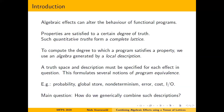Program equivalence was the topic of my talk last year at MFPS. The focus here is: given that we have for certain effects a notion of truth and an algebra given by a local description, is there a way to generically combine such descriptions? We can apply this to multiple effects like probability, global store, non-determinism, error, cost, and input/output — but for each particular effect and each combination we need to specify a specific notion of truth and a specific algebra.